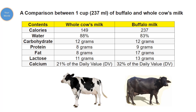Here is a comparison chart between one standard cup — 237 ml — of buffalo and whole cow's milk. Calories in cow's milk are 149 and in buffalo milk 237. Water content in cow's milk is 88 percent and in buffalo's milk 83 percent.